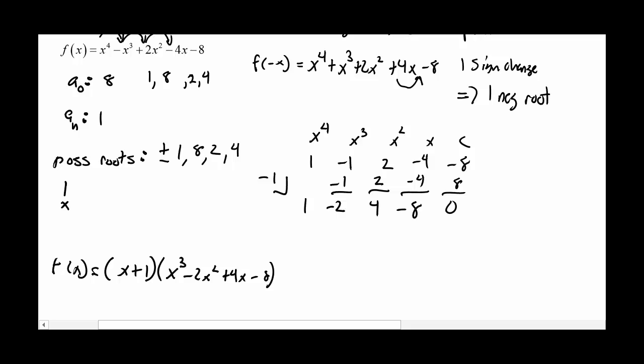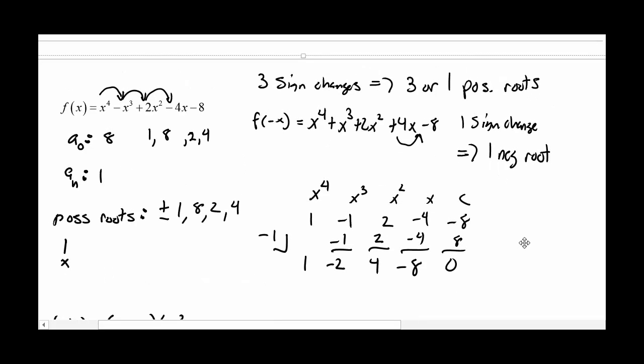But at this point, let's kind of go back up here. Our Descartes rule of sign told us that we had one negative root. We found it already. So at this point, I don't have to guess any more negative numbers.